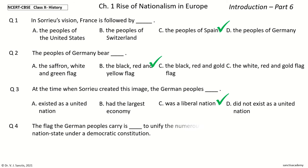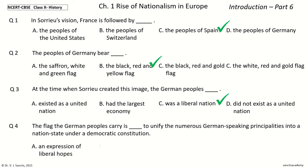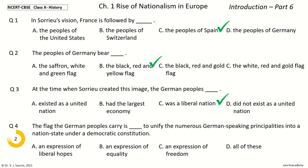Question 4: The flag the German peoples carry is [blank], to unify the numerous German-speaking principalities into a nation state under a democratic constitution. The options are: an expression of liberal hopes, an expression of equality, an expression of freedom, all of these. The answer is an expression of liberal hopes.